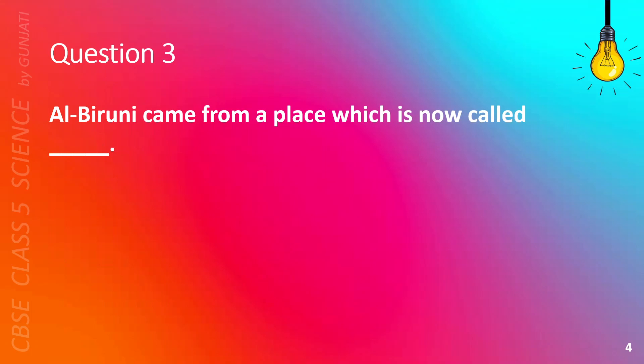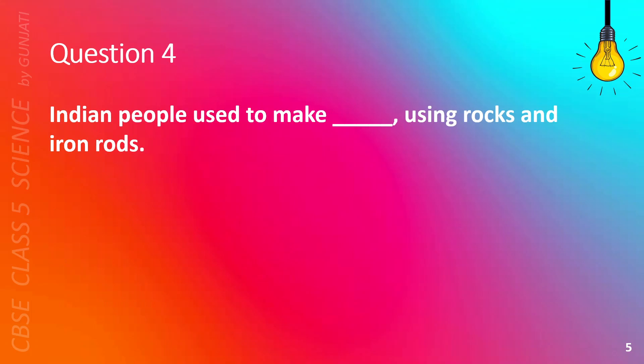Question 3. Al-Biruni came from a place which is now called blank. A. Pakistan, B. Uzbekistan, C. China, or D. Europe. The correct answer is B, Uzbekistan.